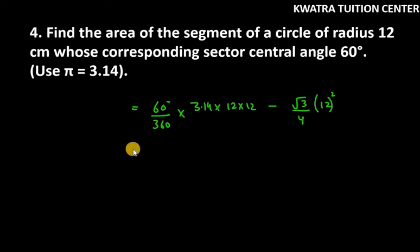So now we have to reduce this. 60 and 360 cancel, you will get 6 at the bottom. 6 and 12 cancel, you will get 2 here. So now when you multiply this, you get 75.36.